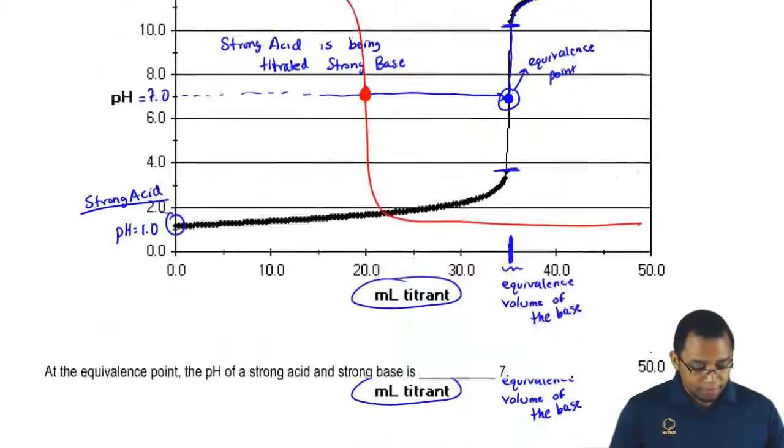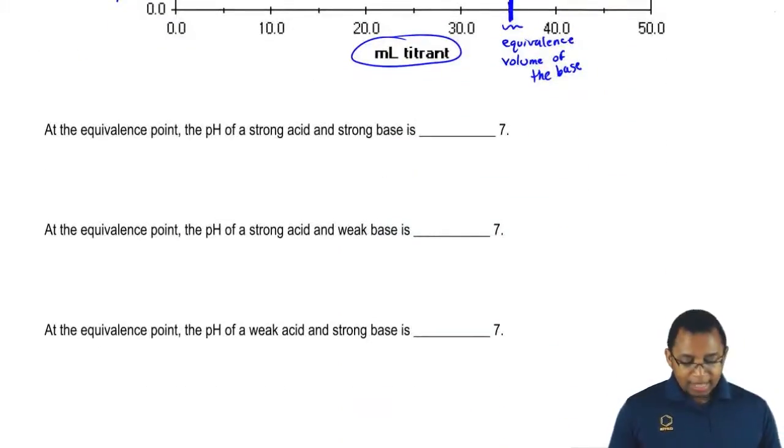If we take a look down below this graph, we've already answered this first part. We're going to say at the equivalence point, the pH of a strong acid and a strong base is equal to 7.